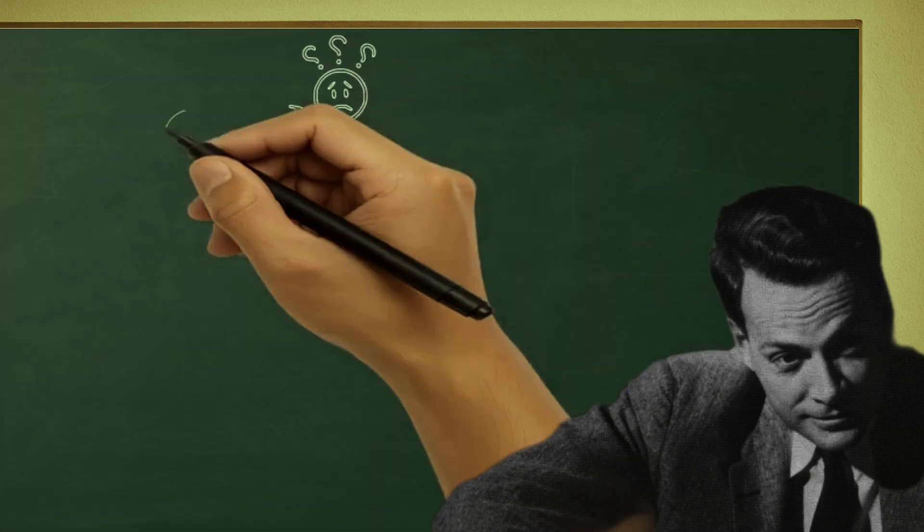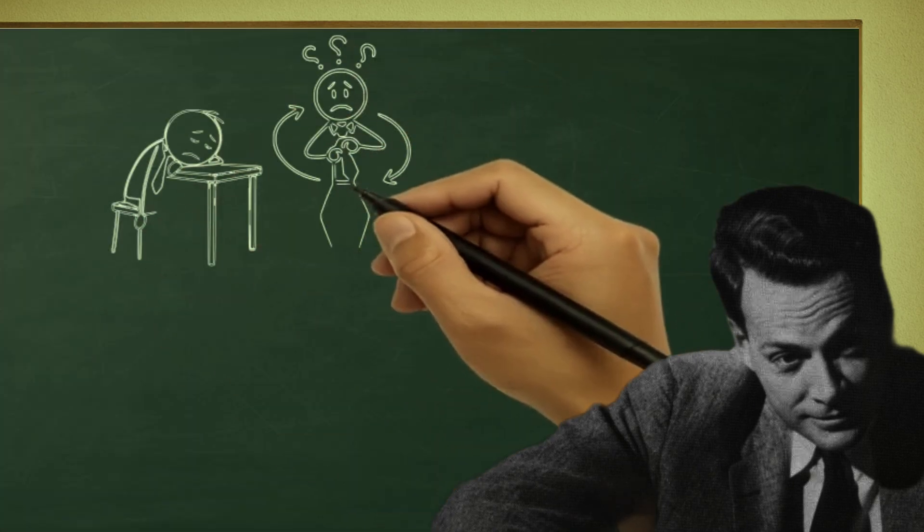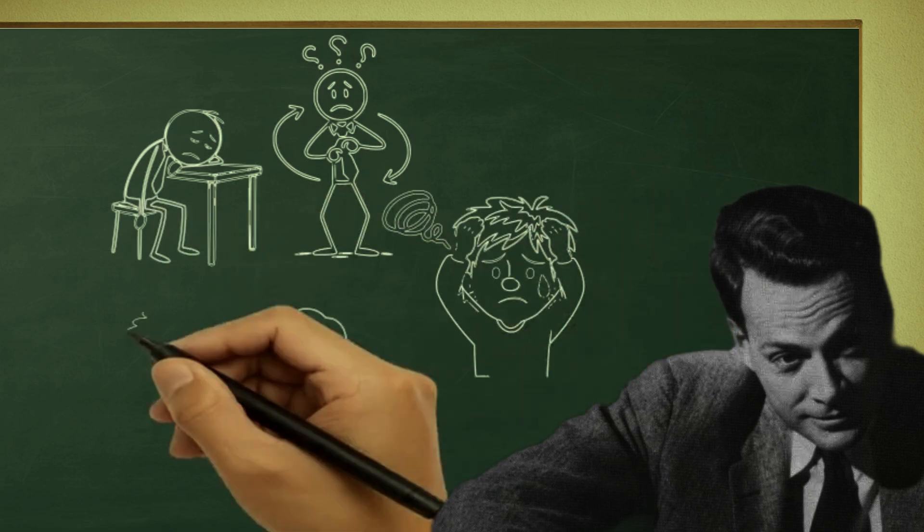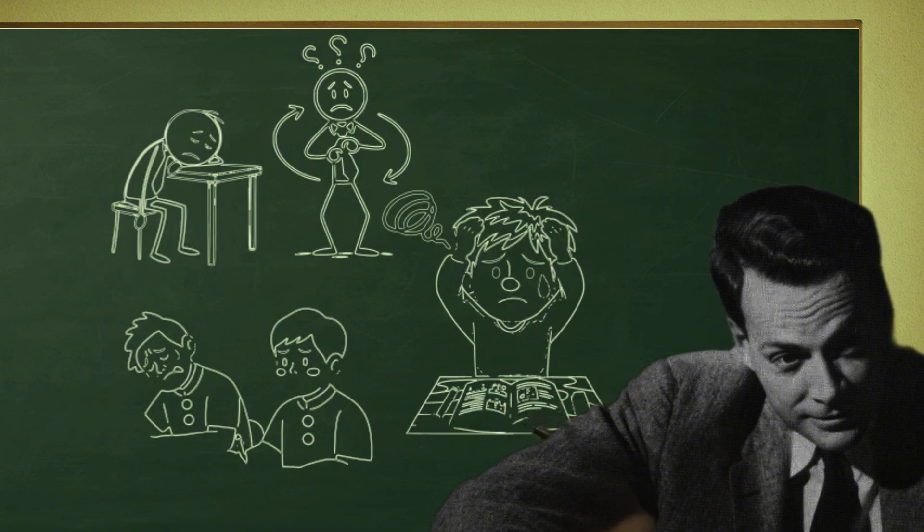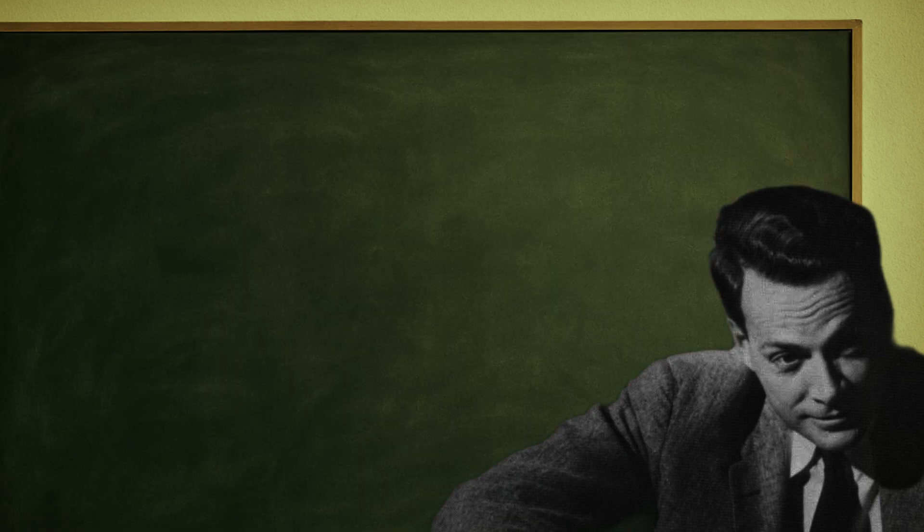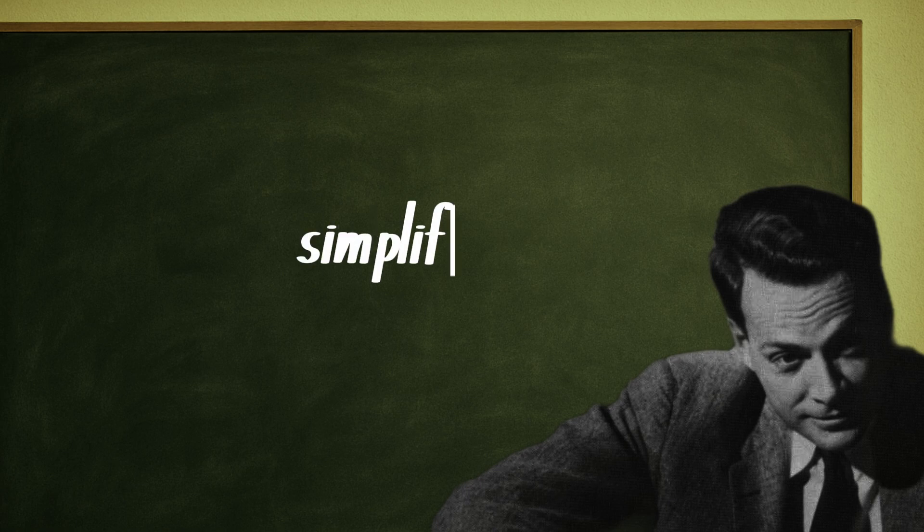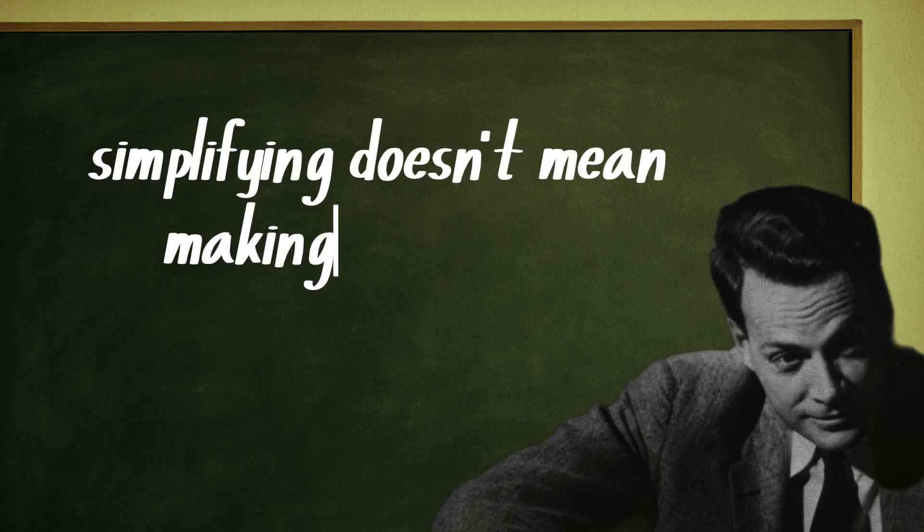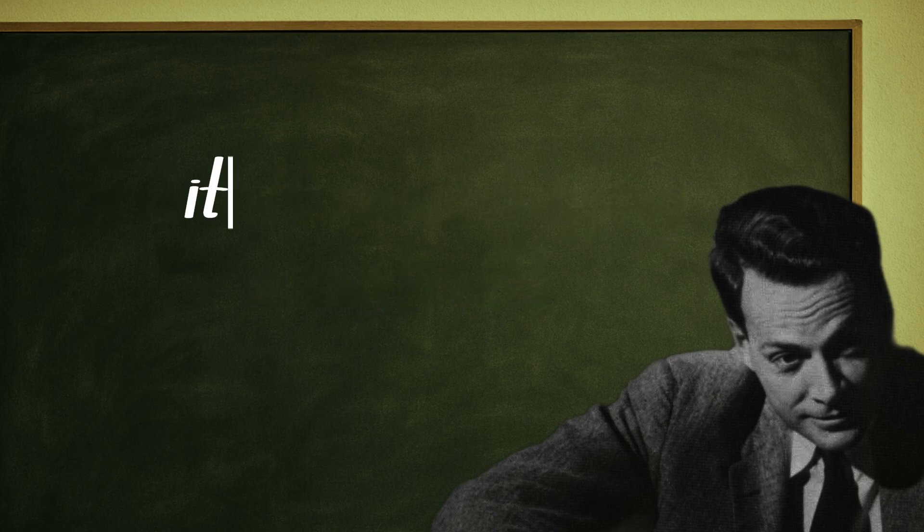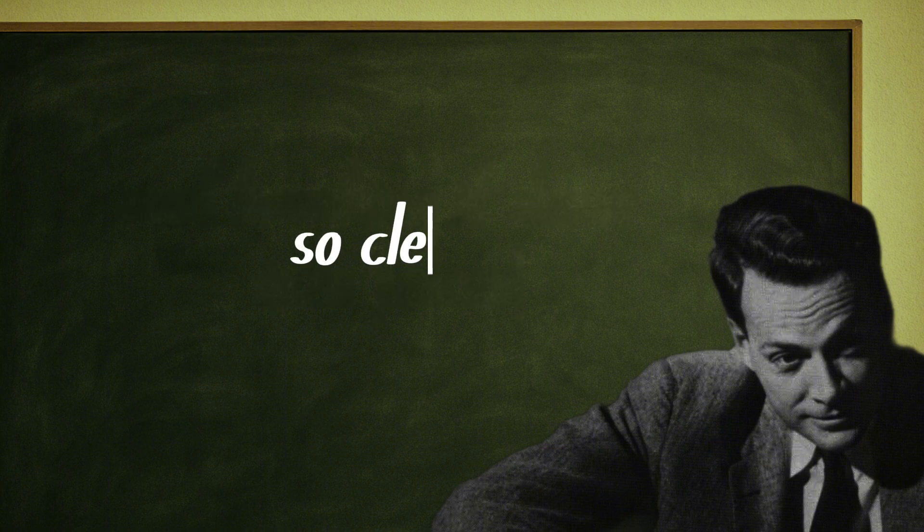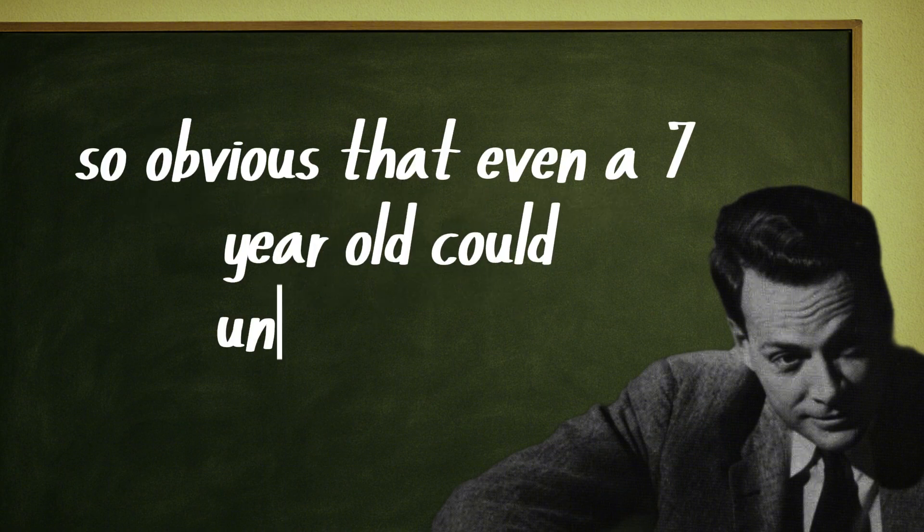Imagine you're facing a complicated subject, one that feels like an impossible wall to climb. Most people at that moment either give up or settle for memorizing loose words, soulless formulas, lifeless concepts. But here lies the first secret that separates the genius from the average student: simplify. Simplifying doesn't mean making something shallow. It doesn't mean stripping away depth. It means taking something complex and breaking it down into pieces so clear, so obvious, that even a seven-year-old could understand it.